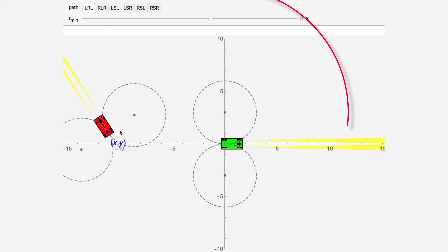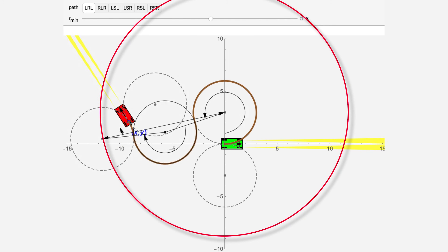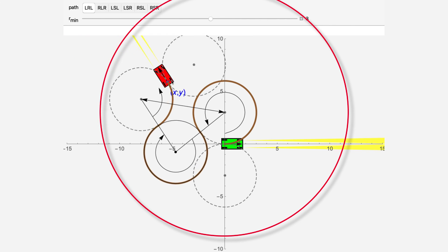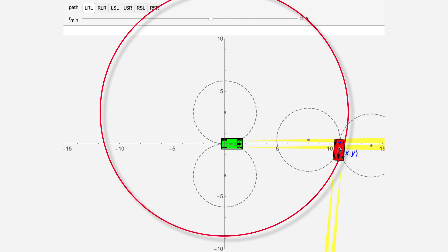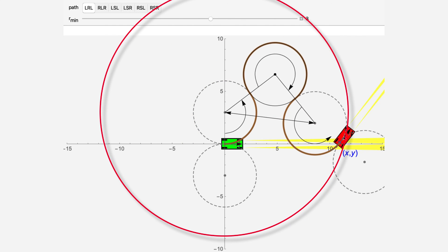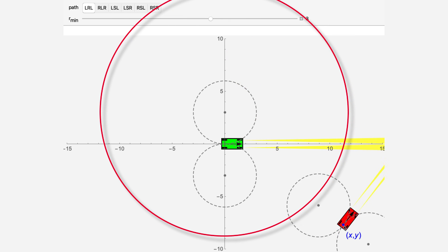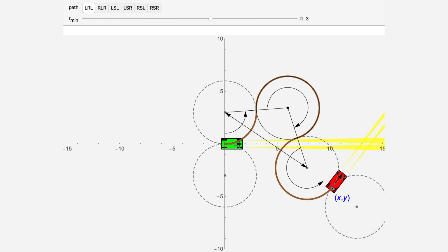The LRL places another circle tangent to both the left starting and ending circles. This is only possible if these circles are within 4 times R-min of each other. We place that circle by constructing a triangle with two sides of length 2 times R-min and the third side is between the centers of the left starting and ending tangent circles. The interior angle corresponding to this line is solved using the Law of Cosines and the exterior angle is the distance traveled during the R-turn in the middle.